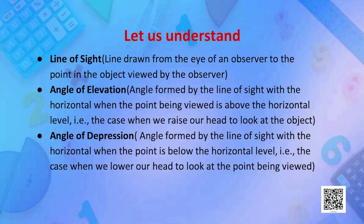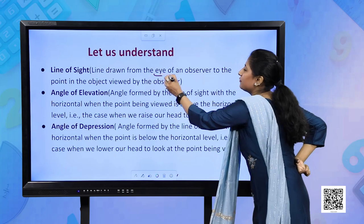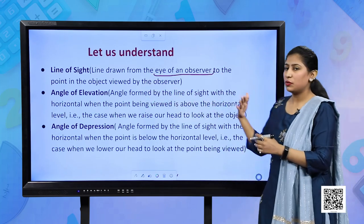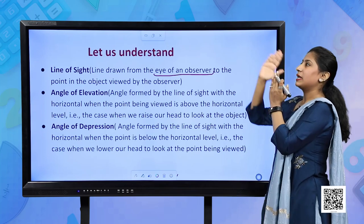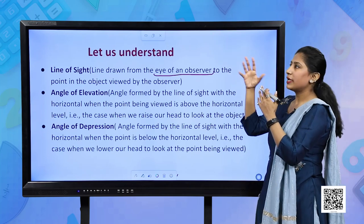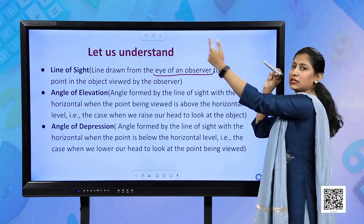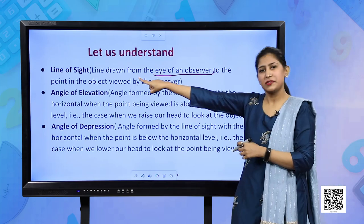Now let's understand three crucial terms. Line of sight - what is line of sight? It is the line drawn from the eye of an observer to the object viewed. Suppose I am standing here and my eyes are in that direction, looking at an object which is there. This imaginary line being formed is called line of sight.